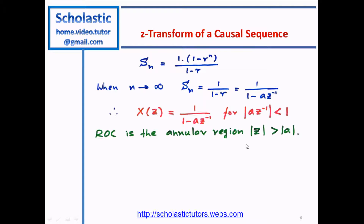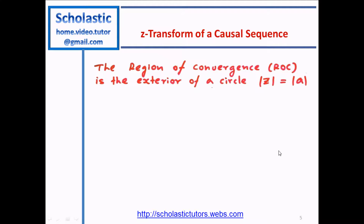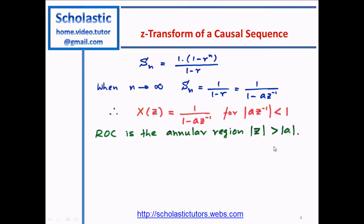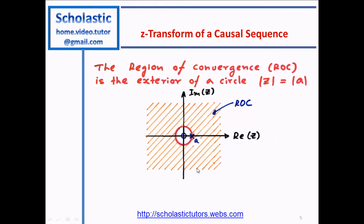The region of convergence is the annular region Z greater than A. We can visualize this by considering the complex plane with real and imaginary axes. We draw a circle with radius A to represent the complex number Z equal to A. According to our result, Z must be greater than A, so the values of Z lying outside this circle form the region of convergence for this particular case — the ROC.